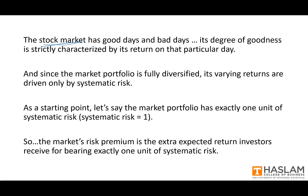A positive 10% return is a better day than a positive 2% return, and a negative 10% return is a worse day than a negative 2% return. Since this market portfolio is fully diversified, these varying returns on good and bad days are driven solely by systematic risk. For normalization purposes, we say that the market portfolio has exactly one unit of systematic risk — so systematic risk of 2 is more risk than the market, and 0.5 is less.